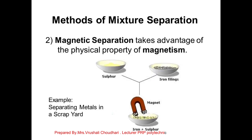Another method of concentration of iron ore is magnetic separation. Iron is magnetic while impurities present in iron ore are non-magnetic. Using the magnetization principle, a magnet attracts iron particles but does not attract non-magnetic particles. So we allow a magnet to pass through the ore, and it attracts only the iron ore while impurities remain as they are.